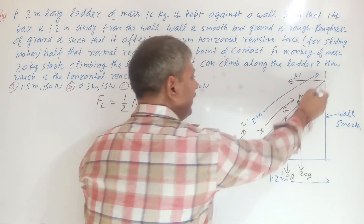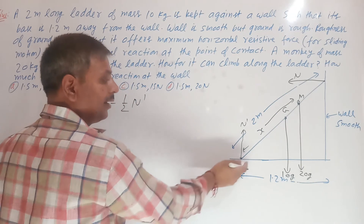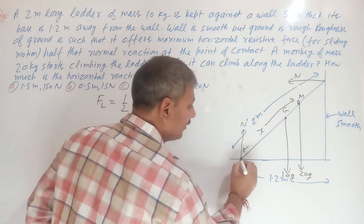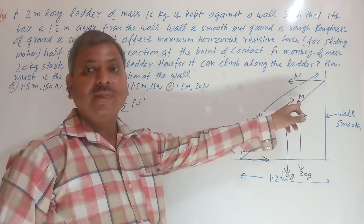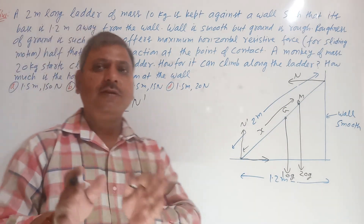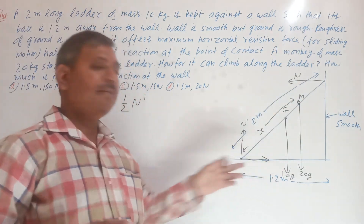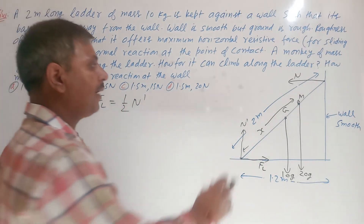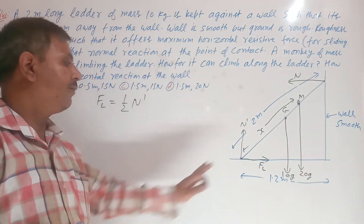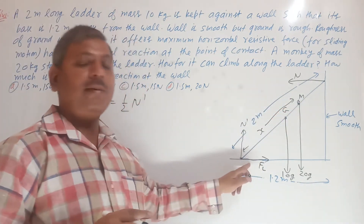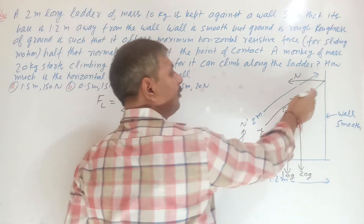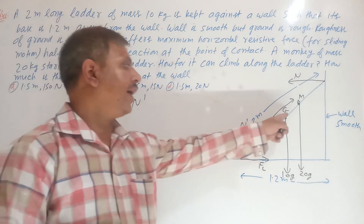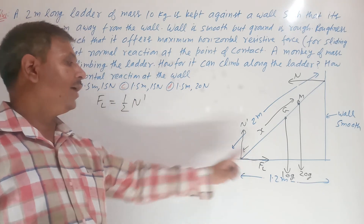The weight of the monkey, 20G, acts vertically downward at point M. The ladder has a tendency to slide in the left-hand direction, so friction force acts towards the right. For maximum climbing, the maximum limiting friction force FL will act. Friction force is variable, but for maximum climbing, maximum limiting force acts. Above this point, if the monkey climbs further, FL cannot adjust and the system begins to slide.